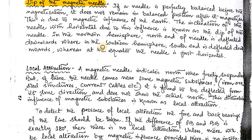The definition is: if a needle is perfectly balanced before magnetization, it does not remain in a balanced position after it is magnetized. This is due to the magnetic influence of the earth. The inclination of the needle from horizontal, due to this influence, is known as the dip of the needle. In the northern hemisphere, the north end of the needle is deflected downwards. In the southern hemisphere, the south end deflects more downward. At the equator, the needle remains horizontal — the north and south forces are in equal balance.